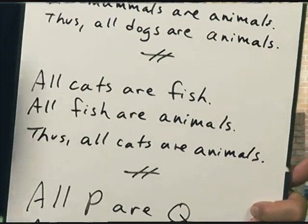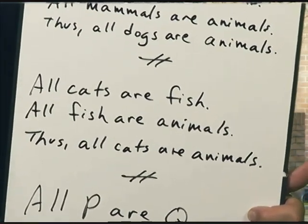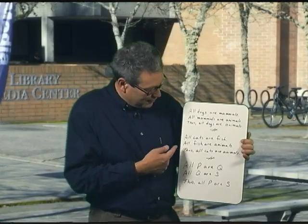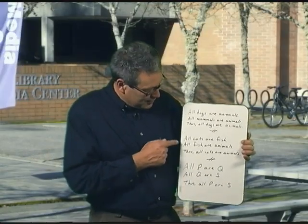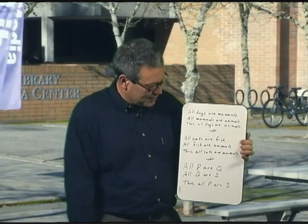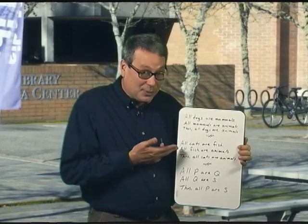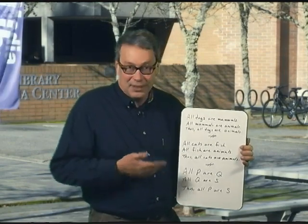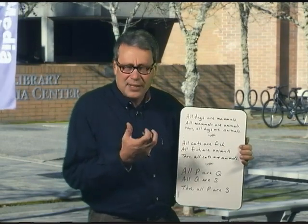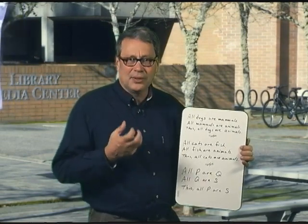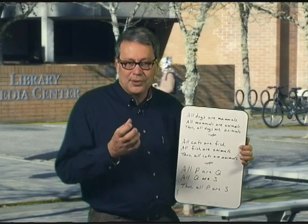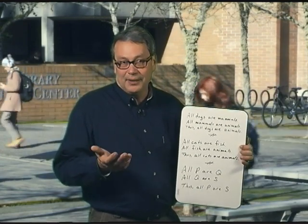The premises are absolutely guaranteeing the conclusion. It's a stupid argument and we should get rid of it, but the reason we don't like it is that the first premise is false — it's ridiculous to say all cats are fish. So it's factually bad, but it's logically good, so we call it valid. That's really the goal of this class: to determine if certain arguments are going to be valid or invalid — that is, would the premises, if they were true, absolutely guarantee the conclusion?